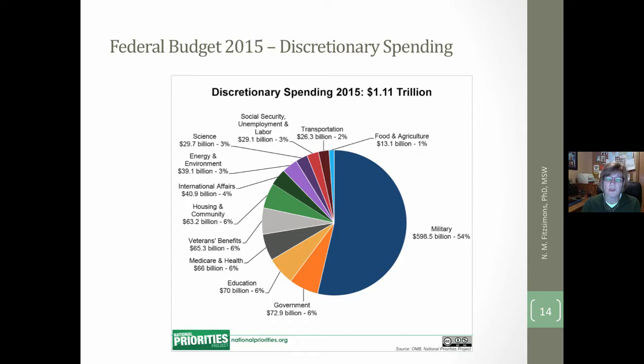This is a breakdown of the discretionary spending budget for 2015. You can see that 54% goes to funding the military. The next largest percentages are each around 6%: government operations, education, Medicare and health, veterans benefits, and housing and community. This gives a sense of discretionary spending, which is outside of mandatory spending.